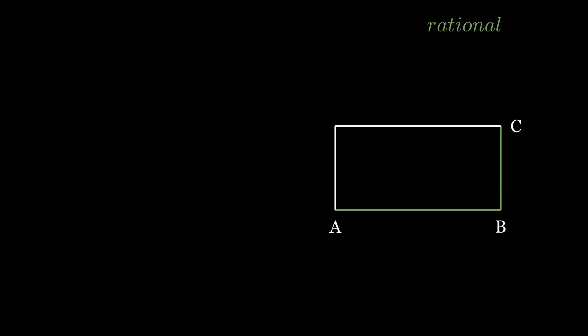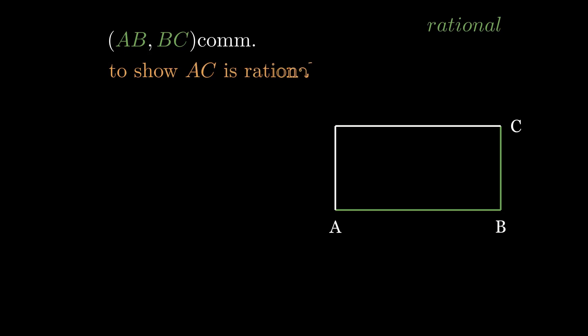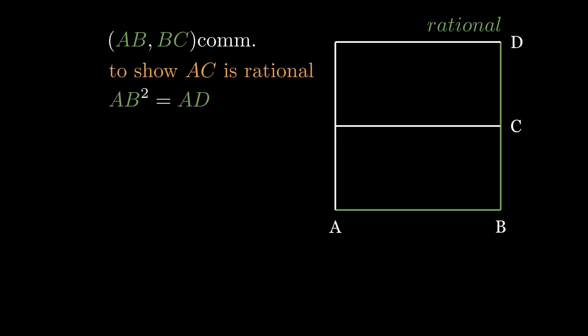Start with rectangle AC, where AB and BC are rational and commensurable. We'll show the rectangle AC is rational. First construct the square AD. AD is the square of AB, which is rational, so AD is also rational.